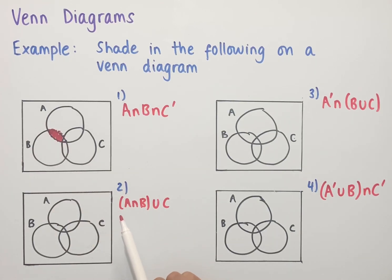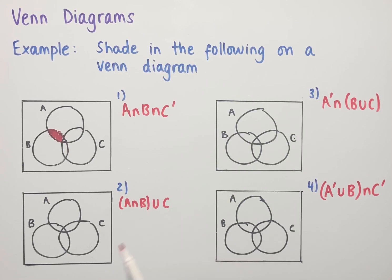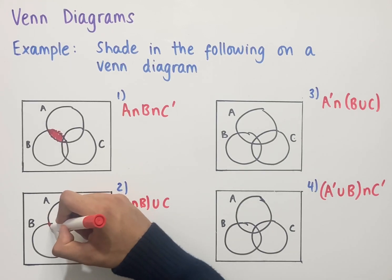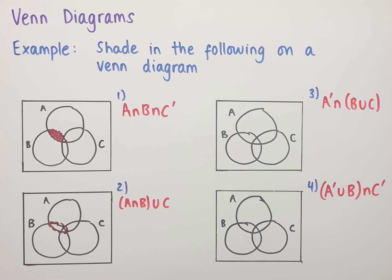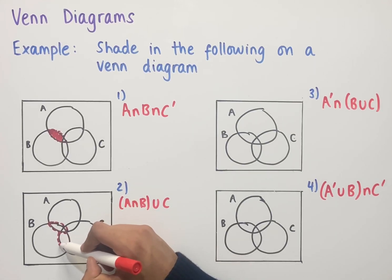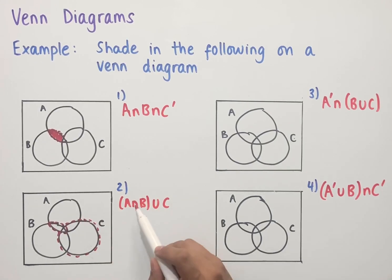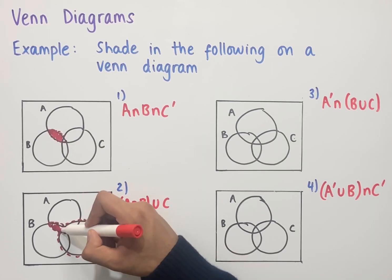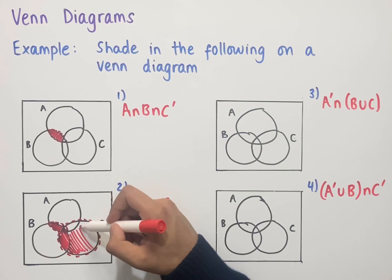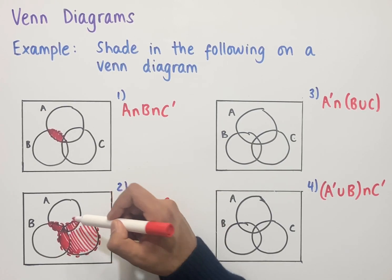The second example says A intersect B in brackets, then union C. Again, we work from the left, starting with the first bracket. A intersect B is this region here. We're looking at the union with C, so we combine A intersect B with C — all of C is this circle here. The union includes both A intersect B and all of C, so we shade in all of this region, giving us A intersect B union C.